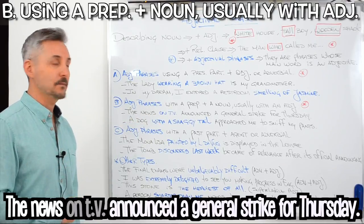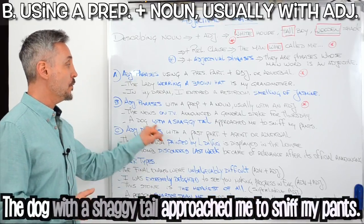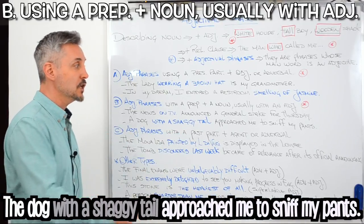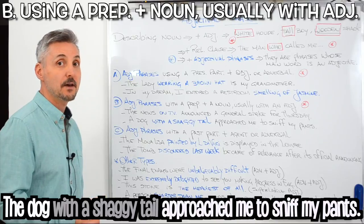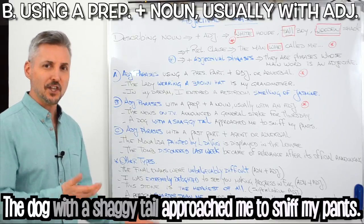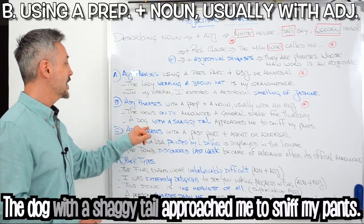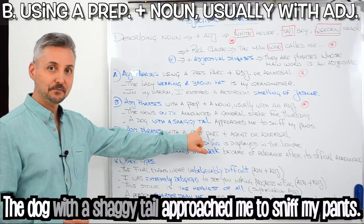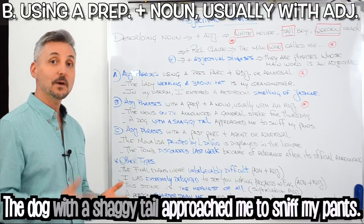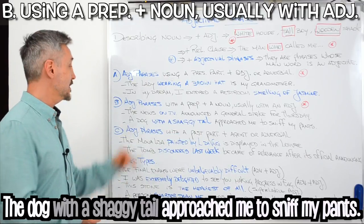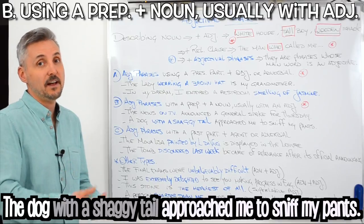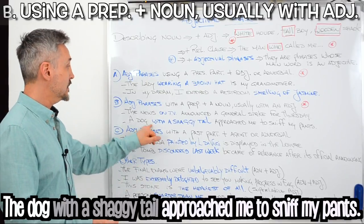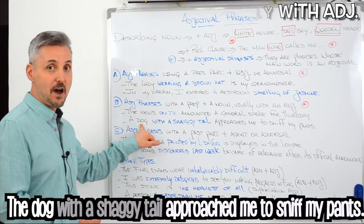Another example: A dog with a shaggy tail approached me to sniff my pants. Which dog? The one with a shaggy tail. So, it describes the dog — with a shaggy tail is a prepositional phrase that describes the dog.